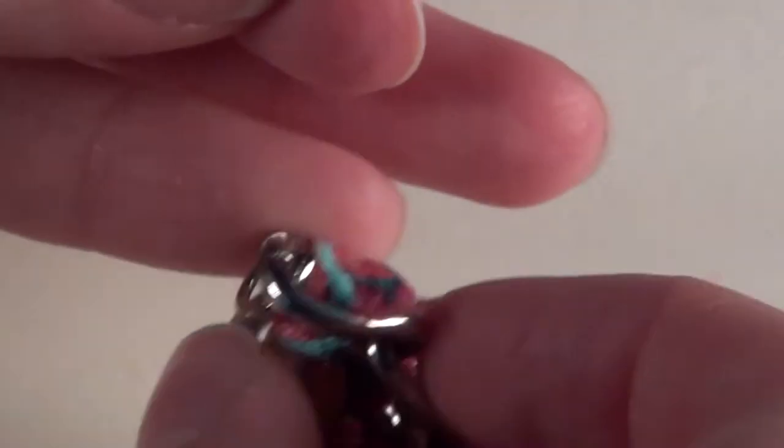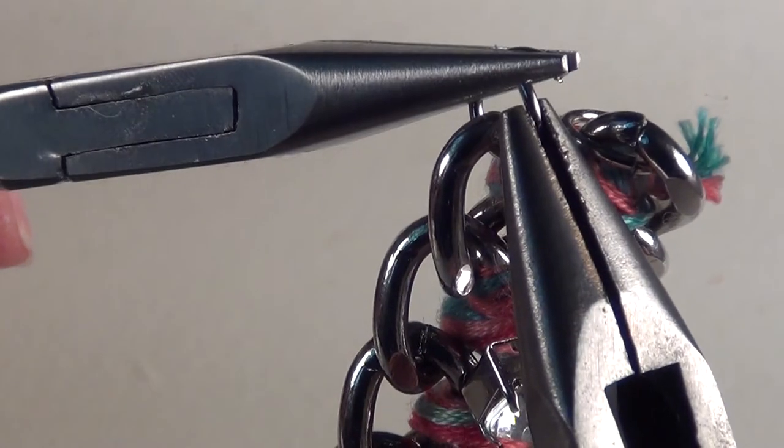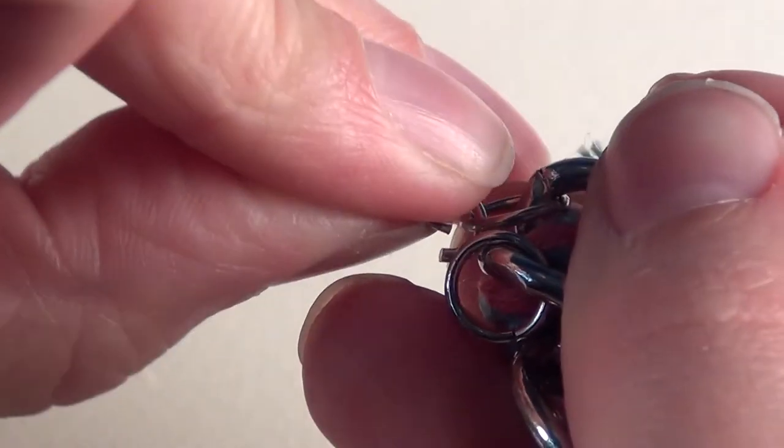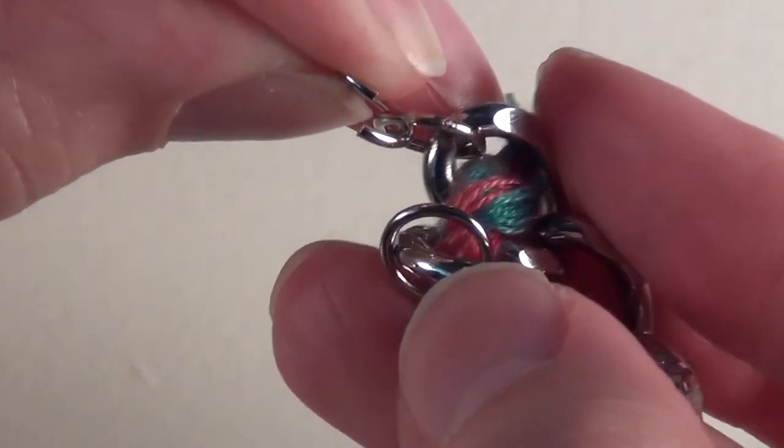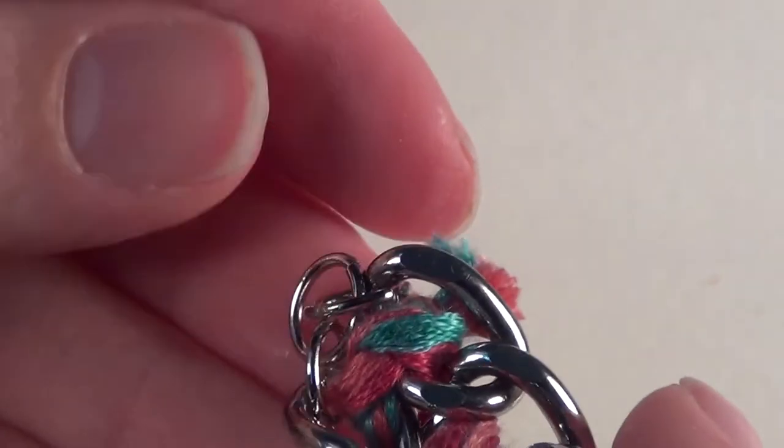And on the other end, you can either add jump rings onto this end to hook it into, or you can also open this one up. Close it up. Open another jump ring to add to the other side. Close that up. Hook those onto one last jump ring. Now you've got something for your lobster clasp to hook onto.